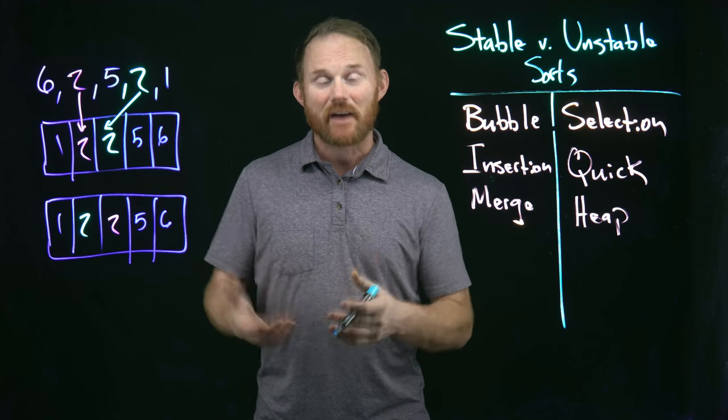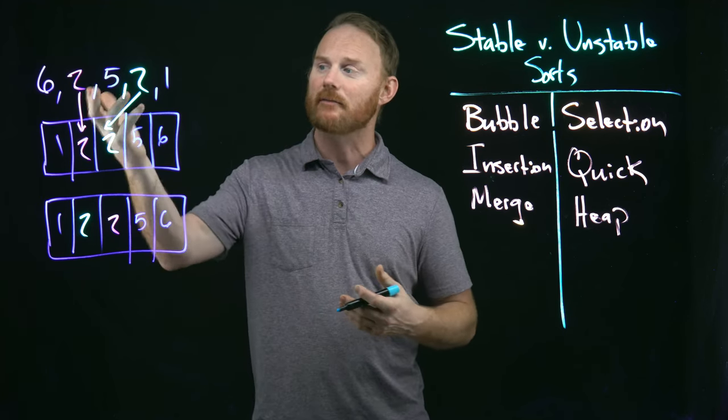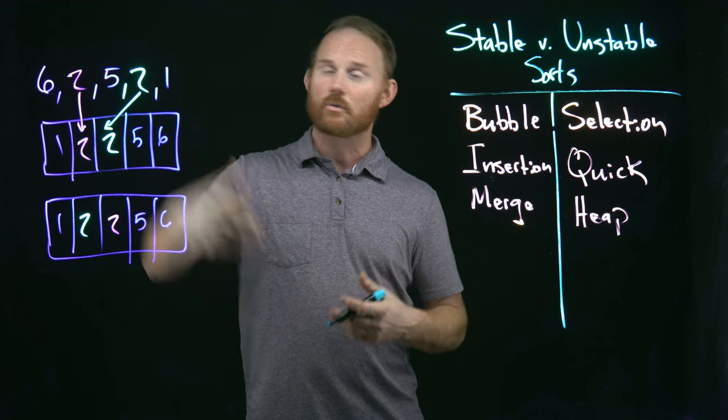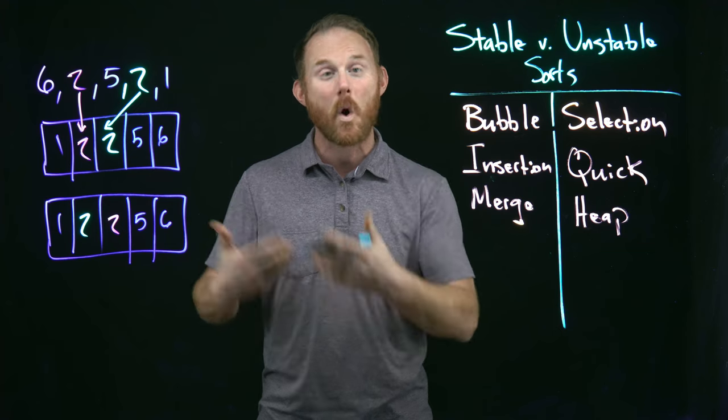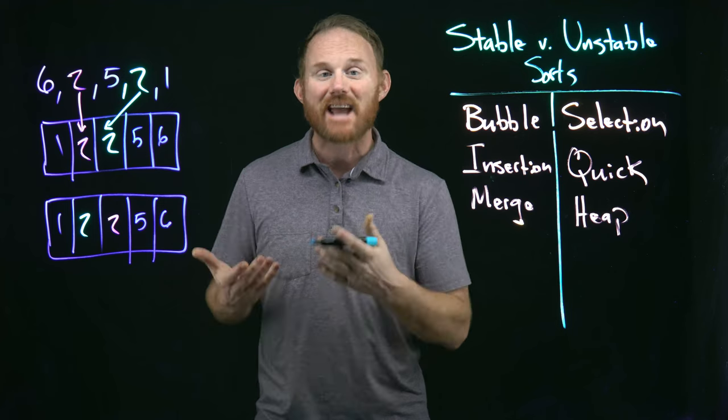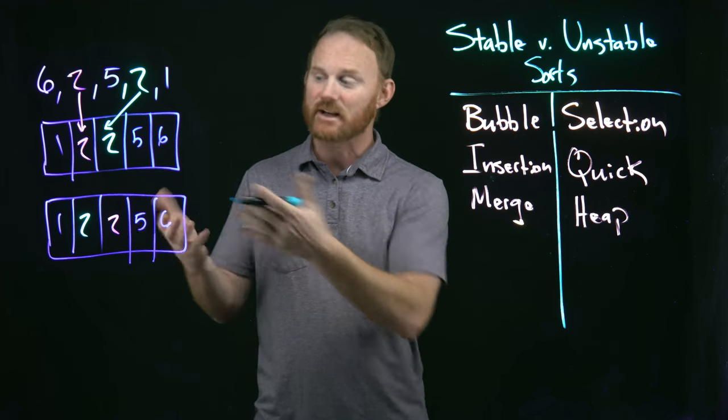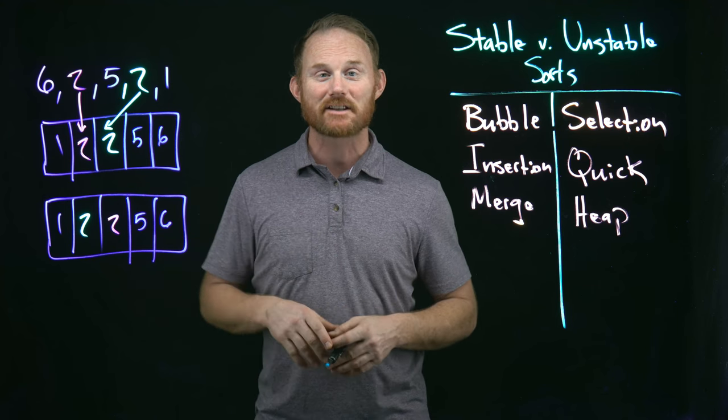The other one would be if every element in the array is already distinct. So in this case, we have two twos. If one was a two and one was a seven, you can use an unstable algorithm because you're not going to have any collisions. There won't be any overlap. When is it, what's an example of when you absolutely have to have one? Because this example makes it look like you never need a stable algorithm.